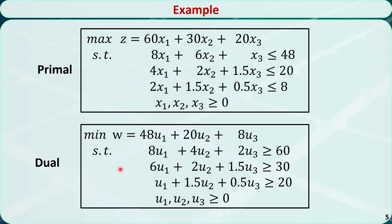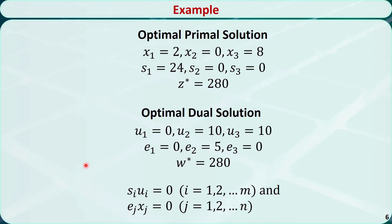Let's check this theorem using an example. This is the primal and this is the dual. We directly list the optimum solutions to these problems here. The optimum solution to the primal is this one, and the optimum solution to the dual is this one. Now let's check if these two conditions are true for all i's and j's.